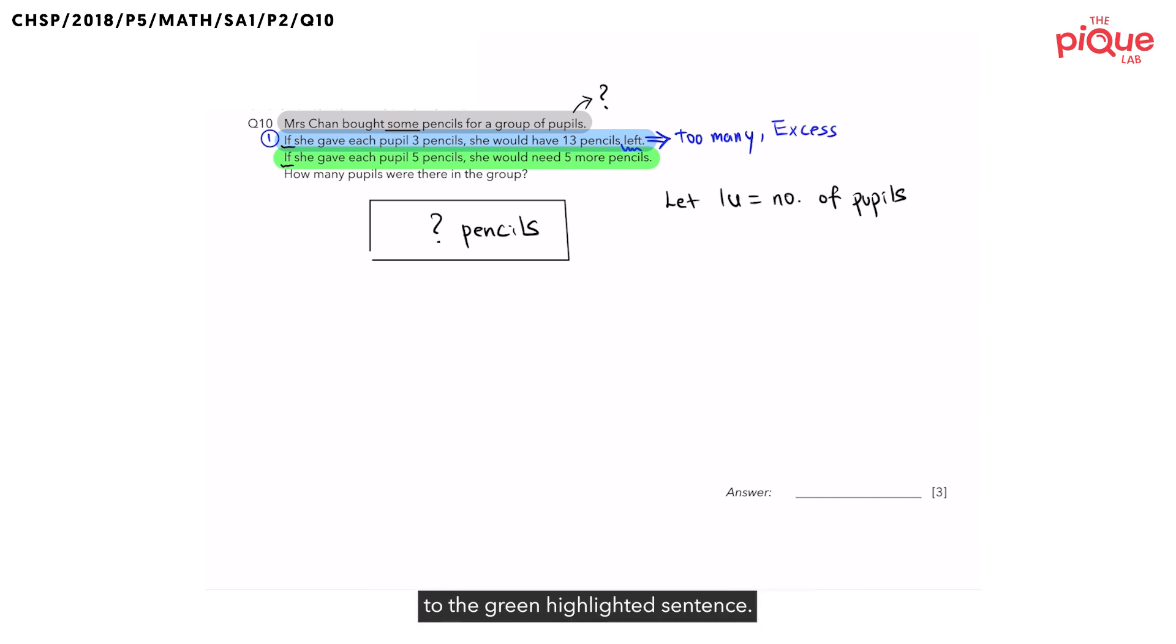Let's do the same thing now to the green highlighted sentence. We will use a pen and indicate a number two beside the sentence. Let's refer to this sentence as case two. In case two, we noted a keyword that is need. What does need mean? Does Mrs. Chan have too many pencils or too few pencils in case two? Need means that she has too few pencils, and it also means that she has not enough. So in this case, she has a shortage.